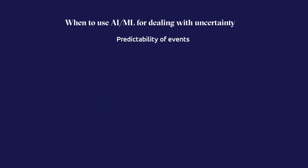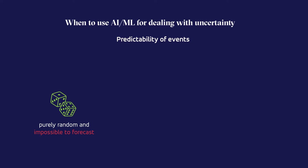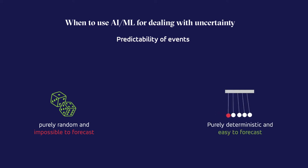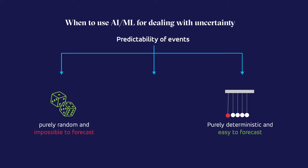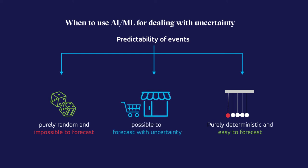An extreme example of uncertainty is a purely random event that is impossible to forecast — for instance, the number resulting from the roll of a dice. On the other extreme is a purely deterministic event that is easy to forecast, for instance, the picture of pendulums on the right-hand side. Looking at it, we can easily predict what follows once the red pendulum strikes the white ones. Between these extremes, there are predictable events driven by systematic and random influences. Forecasting customer demand to achieve business goals, especially the reaction of demand to price changes, is a great example of such an event.